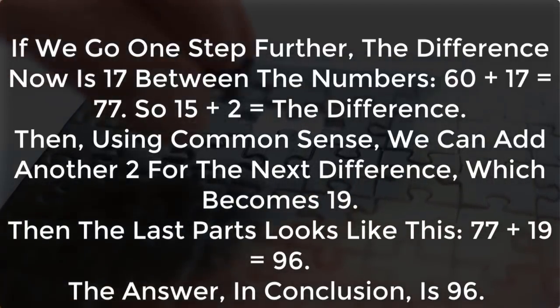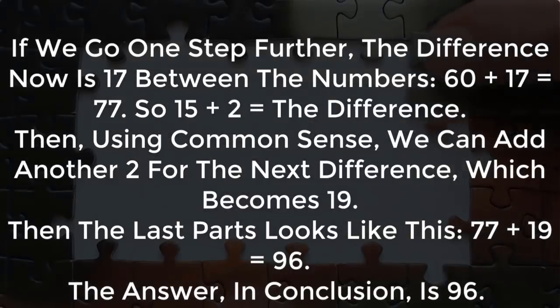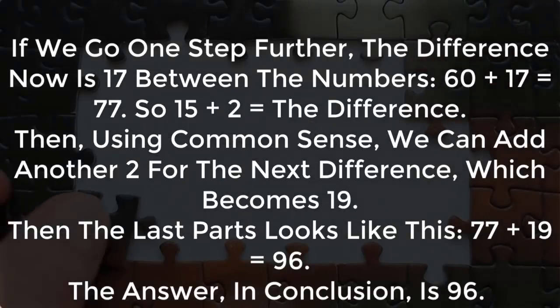Then the last part looks like this. 77 plus 19 equals 96. The answer in conclusion is 96.